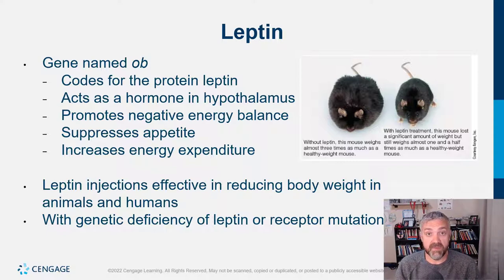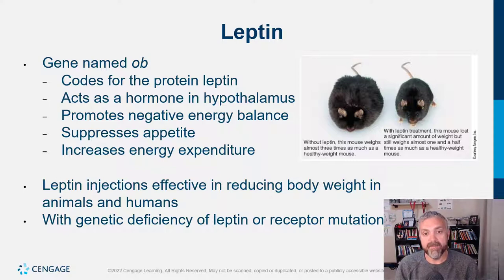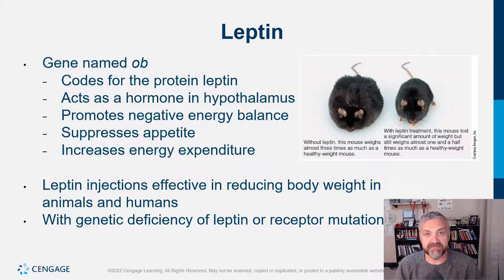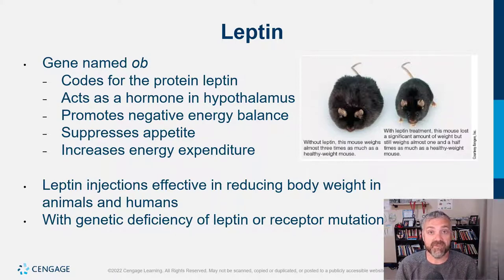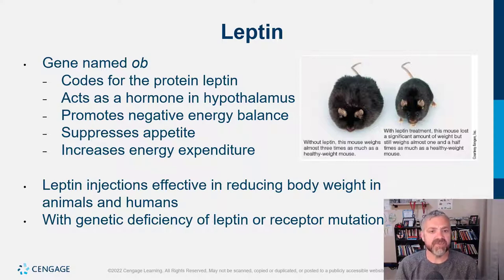They realized the typical obese person isn't leptin deficient — they actually have two or three times more leptin than expected, meaning they are leptin resistant. Just like a type 2 diabetic is insulin resistant and giving them more insulin won't help, you need to increase leptin sensitivity. Leptin acts as a hormone in the hypothalamus, promoting negative energy balance — it suppresses appetite and increases energy expenditure. Leptin is the long-term signal: do we have enough body fat? Leptin injections are only effective in people with a genetic deficiency of leptin or receptor mutation.